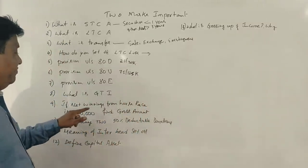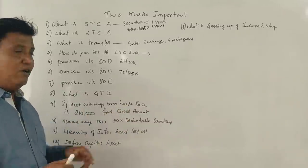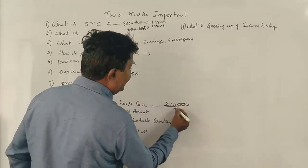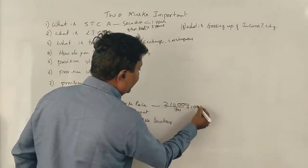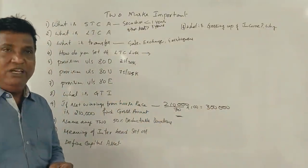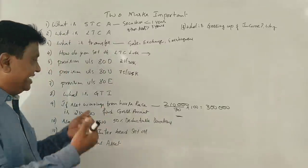Next. If net winning from horses is 2,10,000, fine, gross amount, 2,10,000 divided by 70 into 100,000, 3,000,000, just the number, you get 10,000,000. Clear?